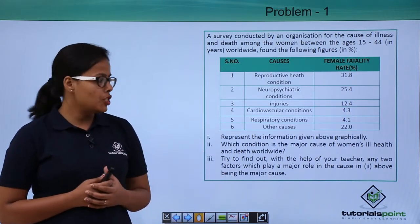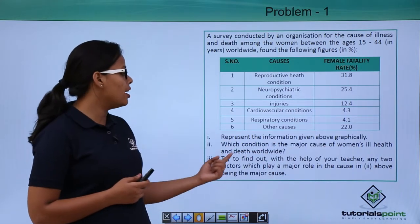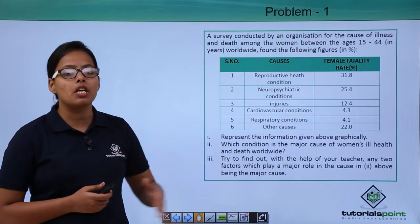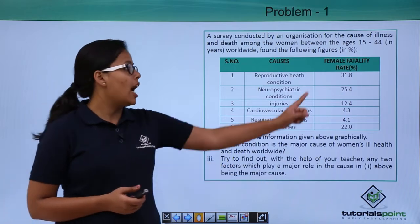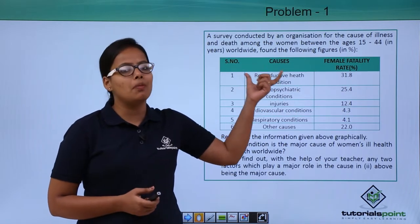For the second part, which condition is the major cause of women's ill health and death worldwide? The major cause will be the one with the highest female fertility rate. The highest rate is for reproductive health conditions, so this is the major cause.